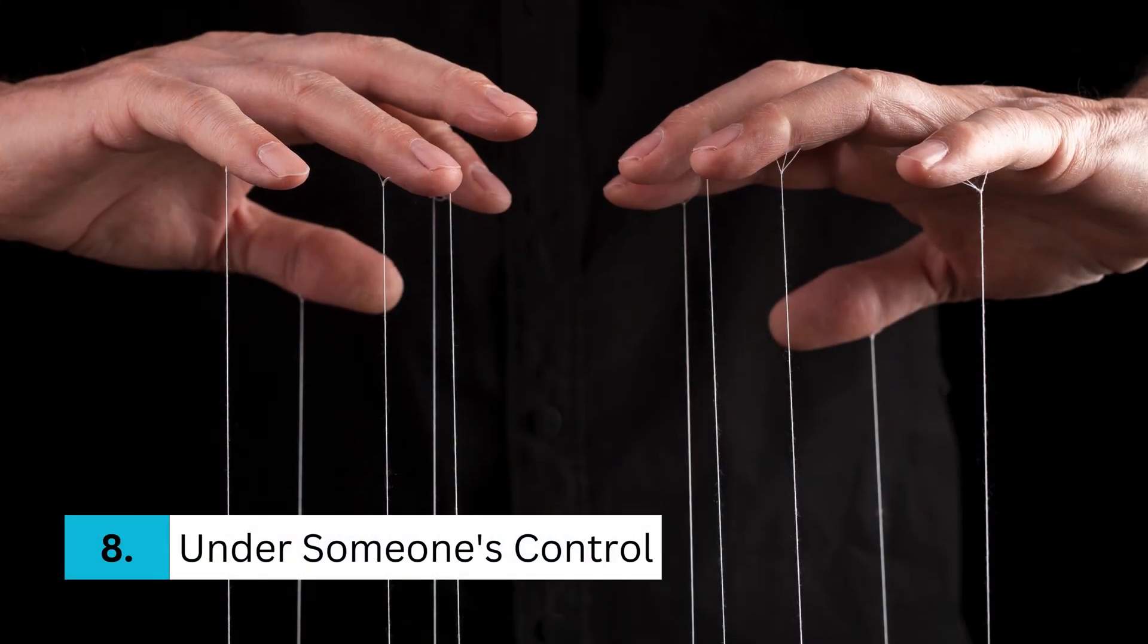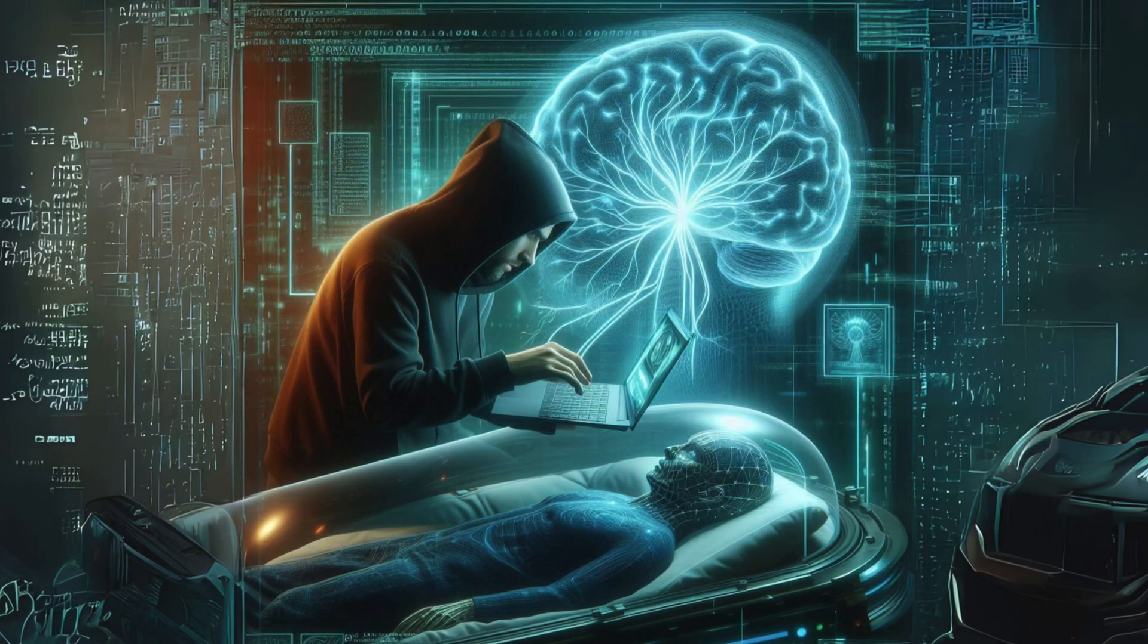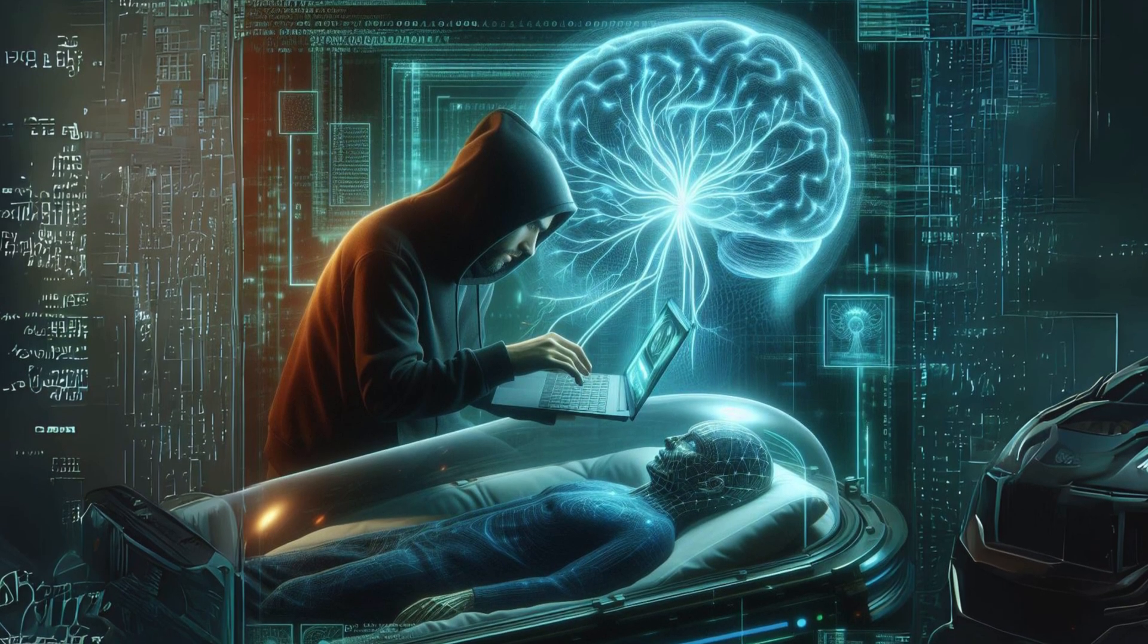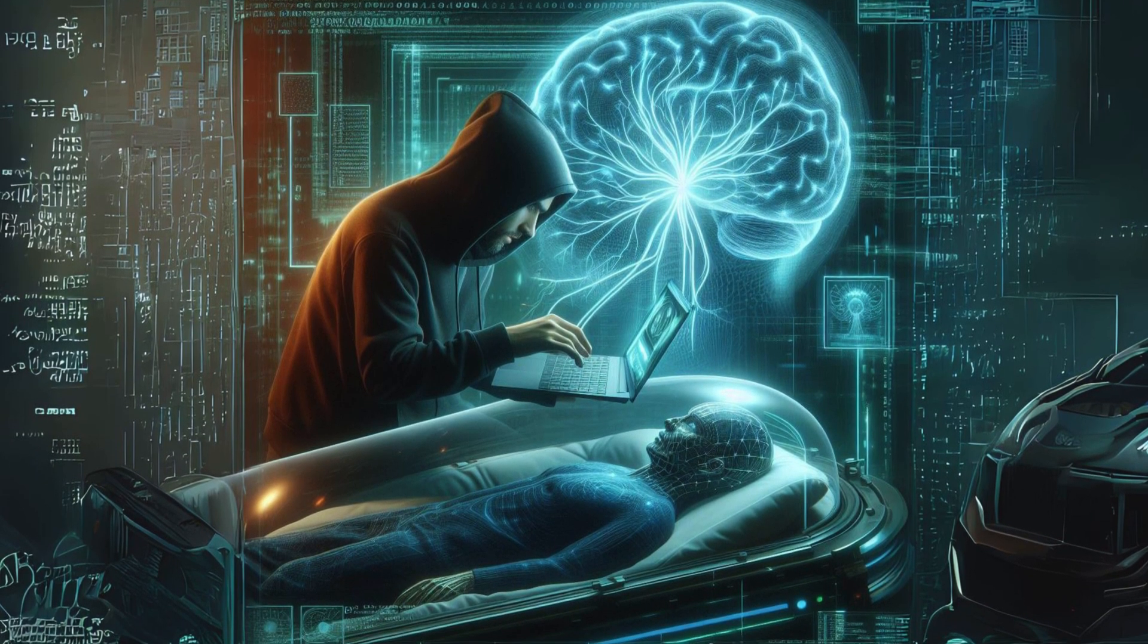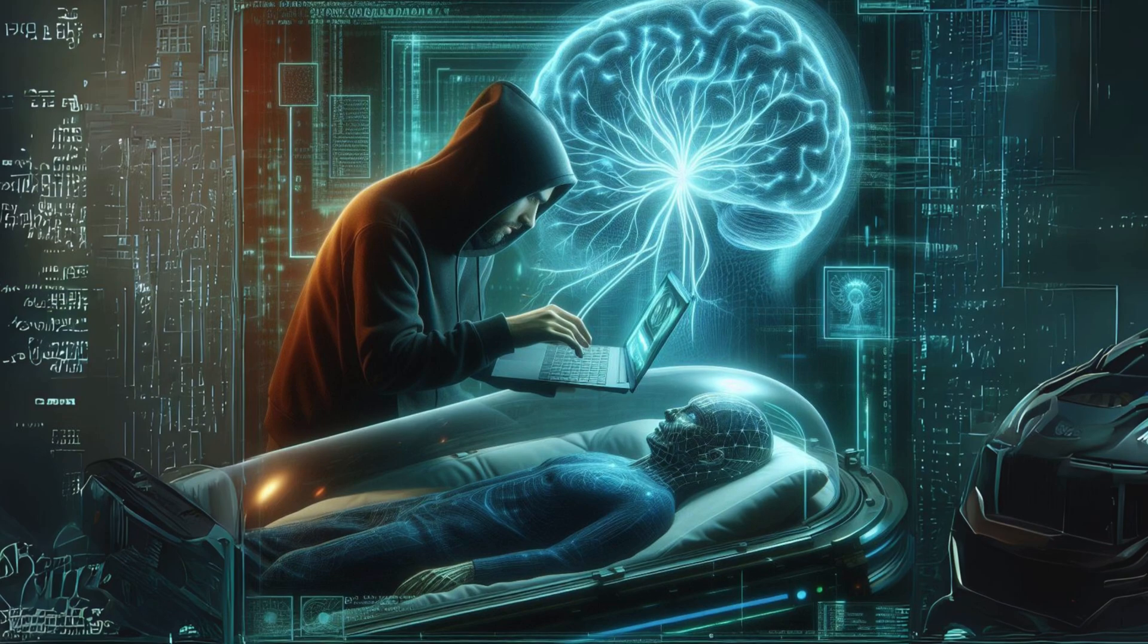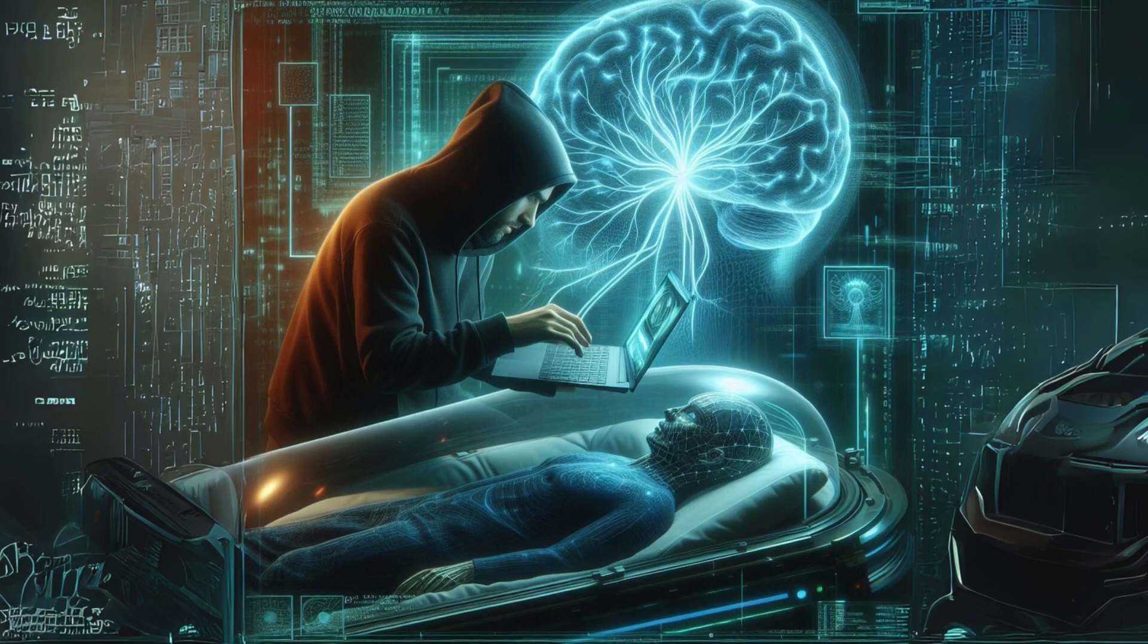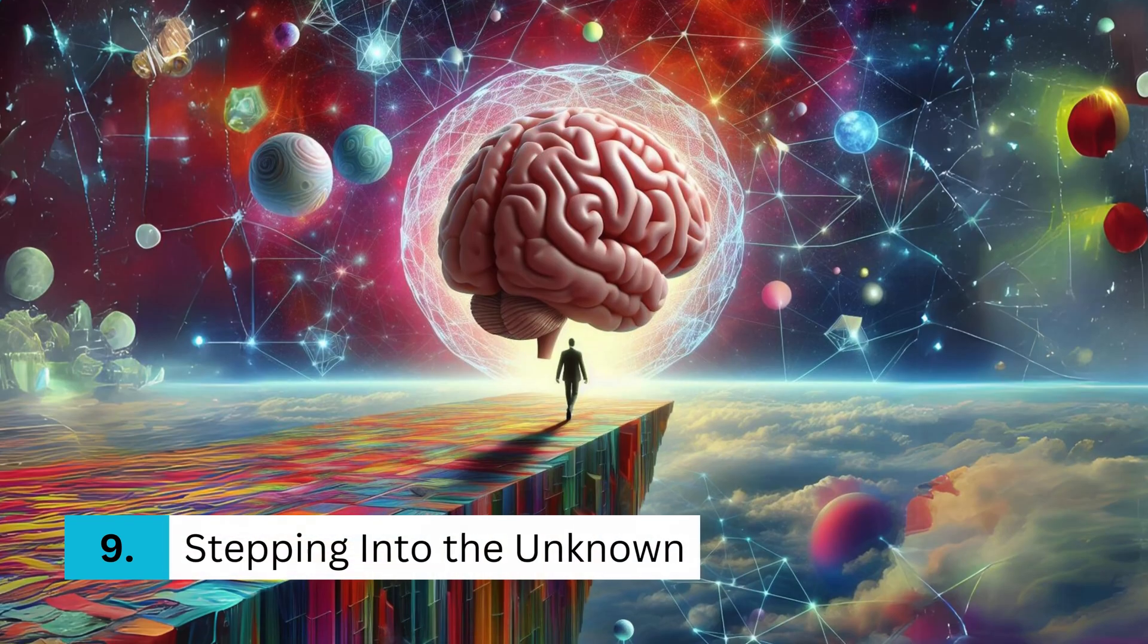Number 8. Under someone's control. What if the wrong people could control what you think or do through Neuralink? It's a power that could be used in some pretty bad ways, like something out of a dystopian novel.